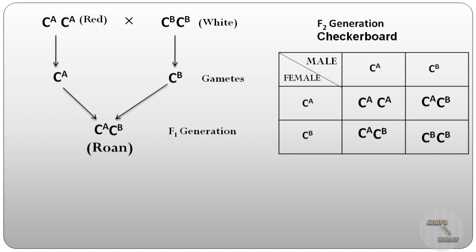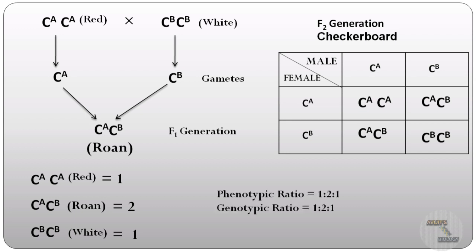So if we produce the checkerboard of F2 generation, then we will get 1 C^A C^A, 2 C^A C^B, and 1 C^B C^B. And also the phenotypic ratio will be 1 is to 2 is to 1, as we are getting 1 C^A C^A, 2 C^A C^B, and 1 C^B C^B.